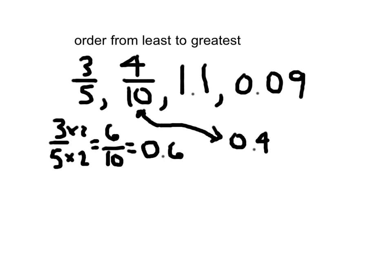Our next step is to look at these numbers. If we're ordering from least to greatest, we compare them. They're all in the same place value — they're all in the ones place. If we compare the next digit for those with 0 in the ones place, because we know those are the least to begin with, we've got 0 versus 6 versus 4. We know the 0 comes first, so 9 hundredths is the first number we're going to write.